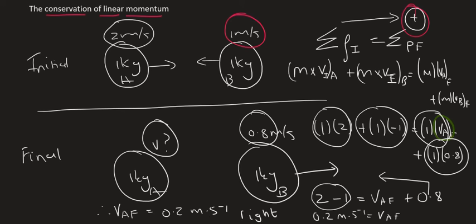The main thing to take away from this video is that when two objects collide, the total momentum of the system stays constant. As a mathematical formula, the sum of the momentum initially must equal the sum of the momentum finally. Always remember, direction is very important — if you choose right as positive but one of the objects is moving to the left, then it has a negative momentum.